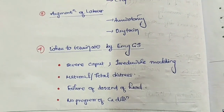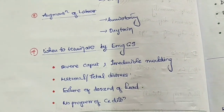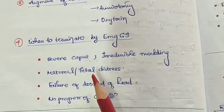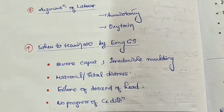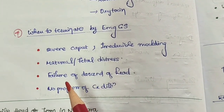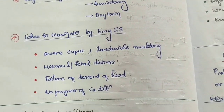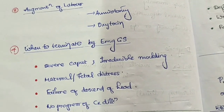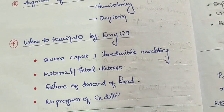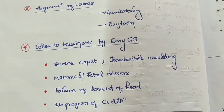When to terminate the trial of labor by emergency cesarean section: if there is a severe caput or irreducible molding, maternal or fetal distress on CTG or fetal heart rate, failure of descent of the head, or no progression of cervical dilatation despite efficient contractions, we must stop the trial of labor and proceed to emergency cesarean section.